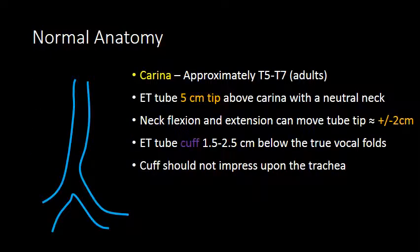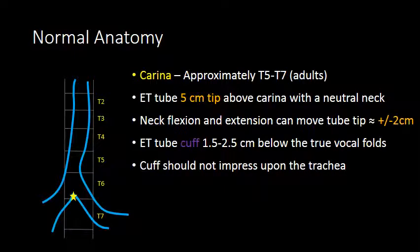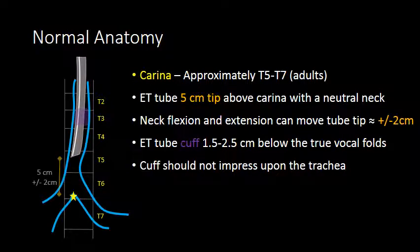When we discuss normal anatomy for endotracheal tube placement, the carina is the most important structure. The carina in adults is located at approximately the T5 to T7 vertebral level. The endotracheal tube tip should be approximately 5 centimeters from the carina, although there is some variability depending on the positioning of the neck. In flexion, the tube may go deeper, and in extension, the tube may move up. So there is a plus or minus 2 centimeter range for proper positioning.